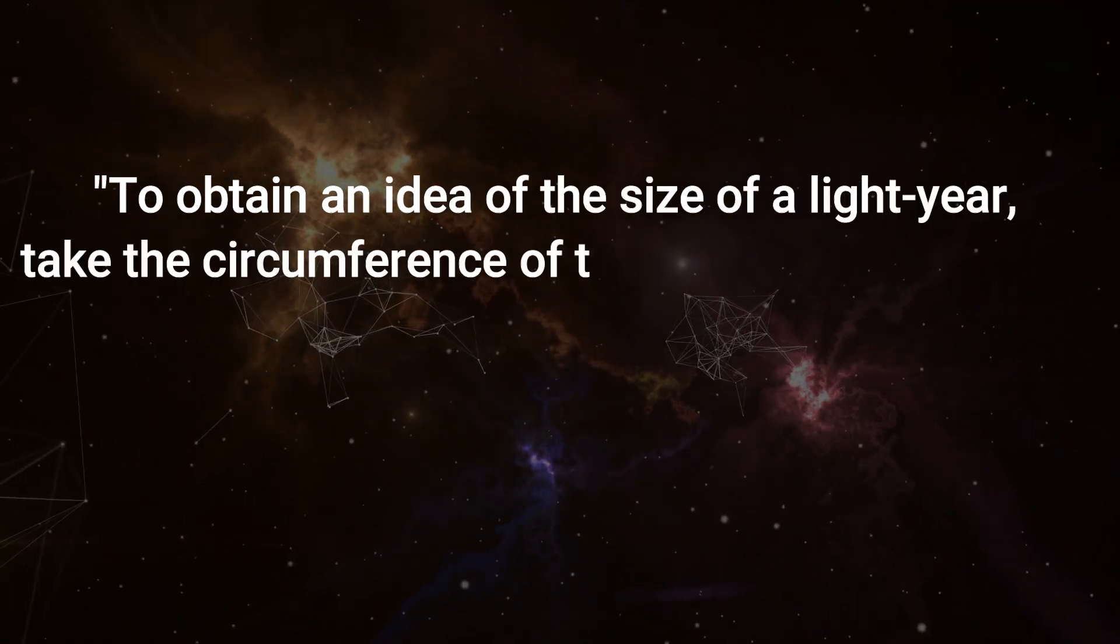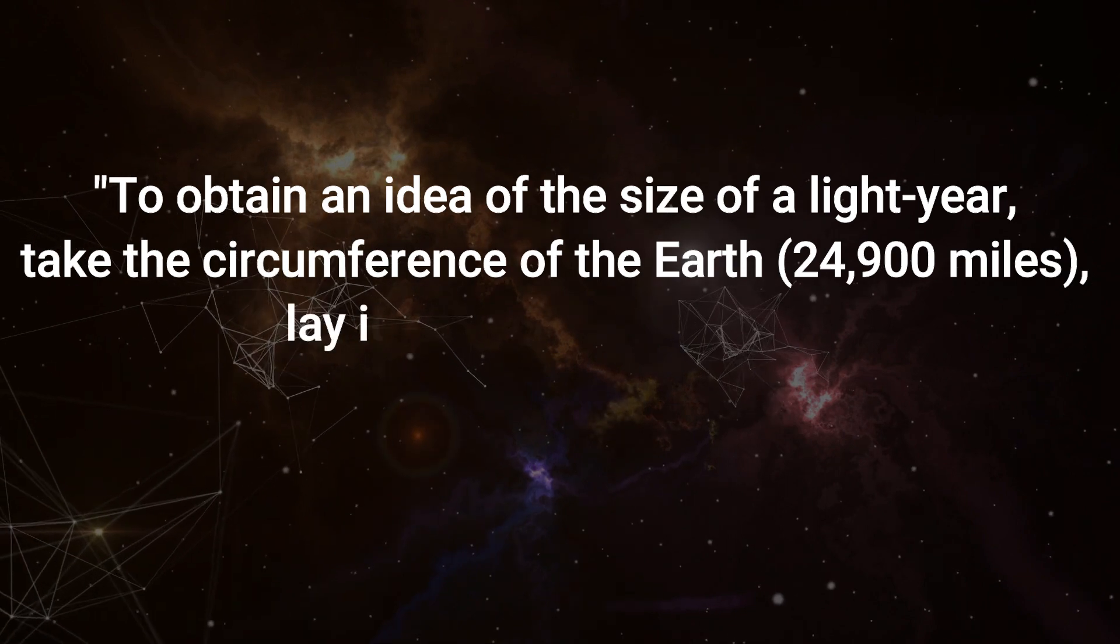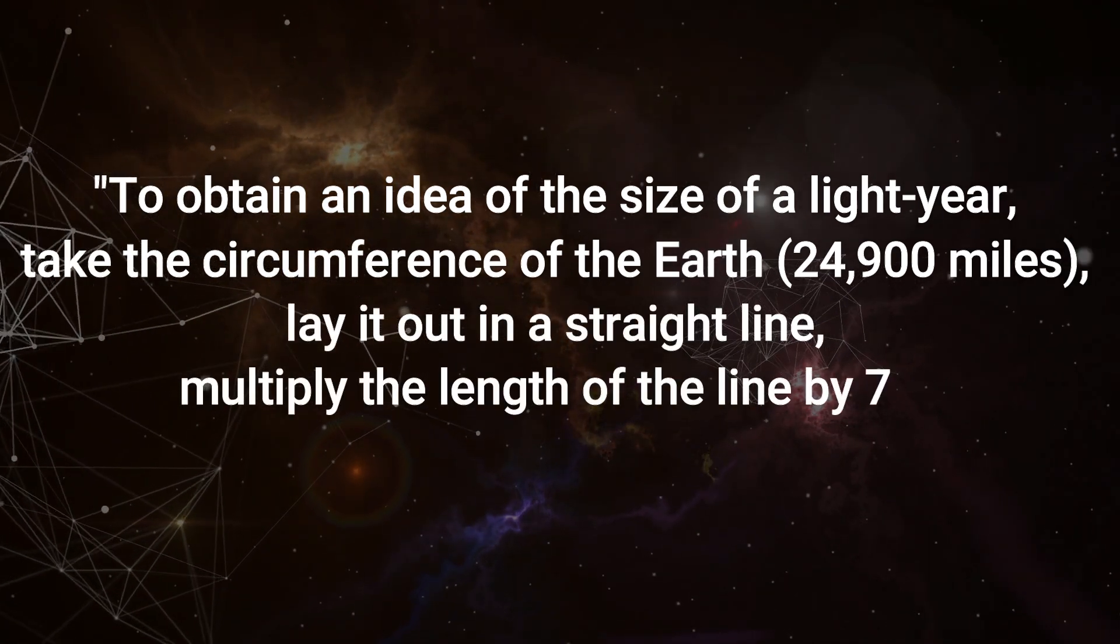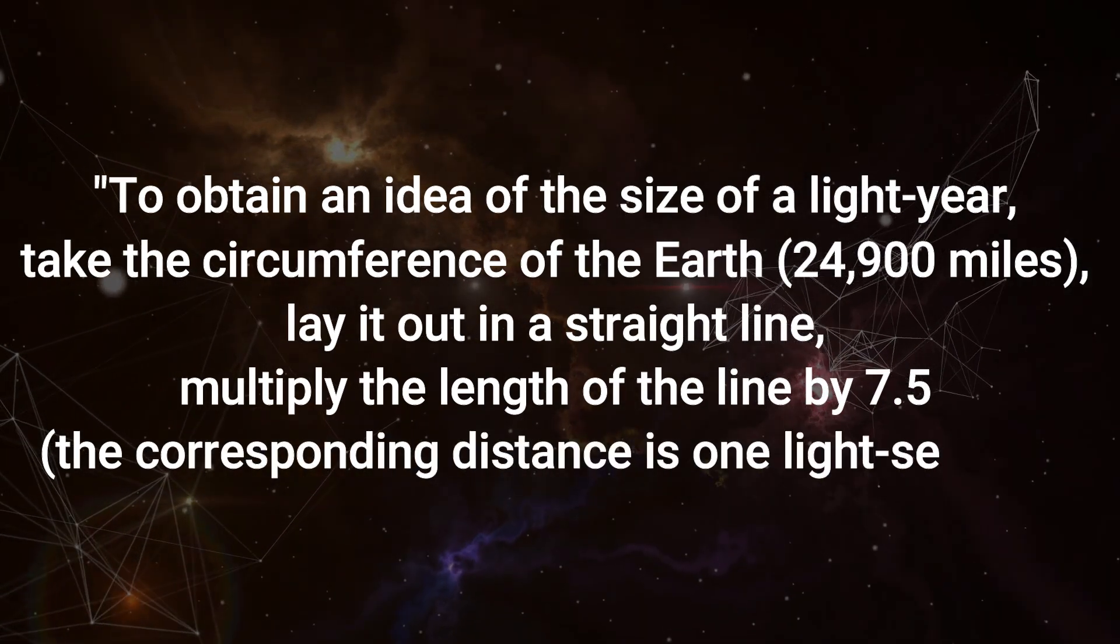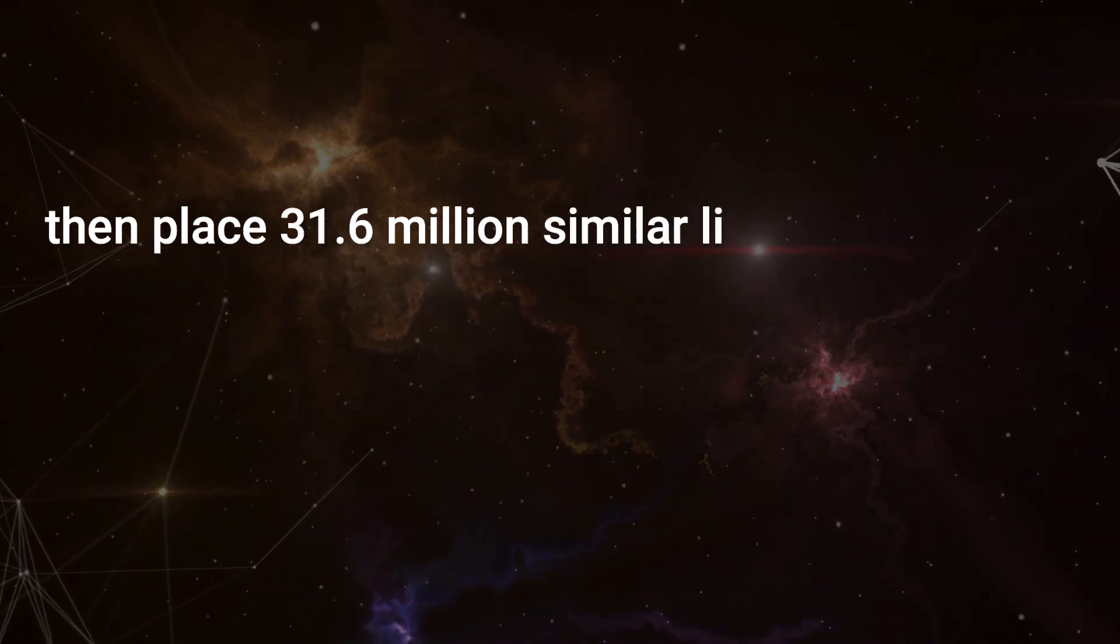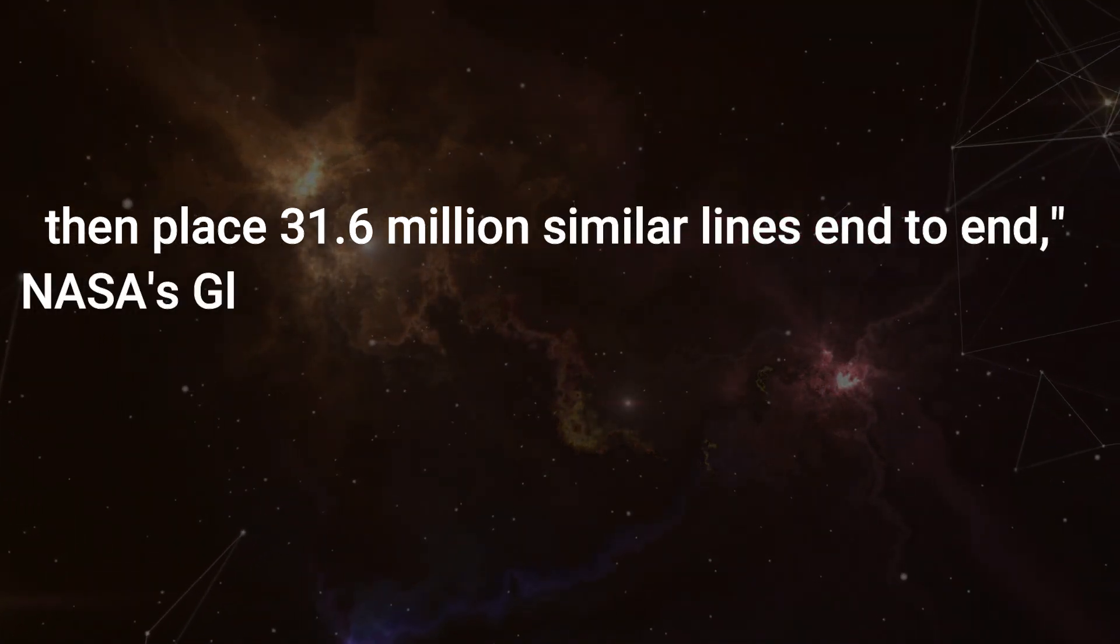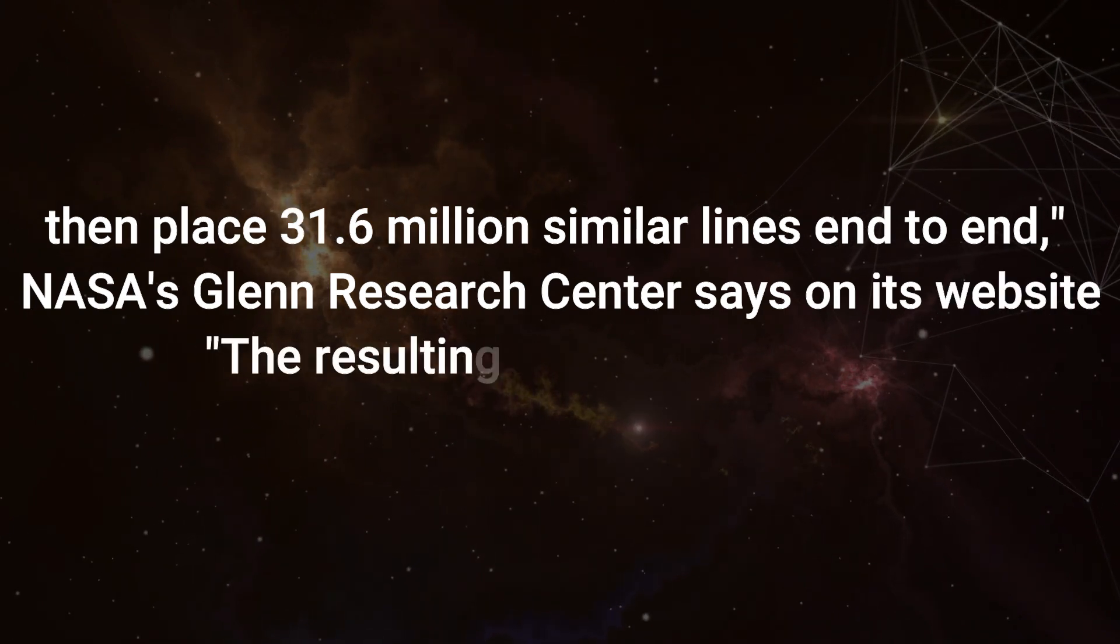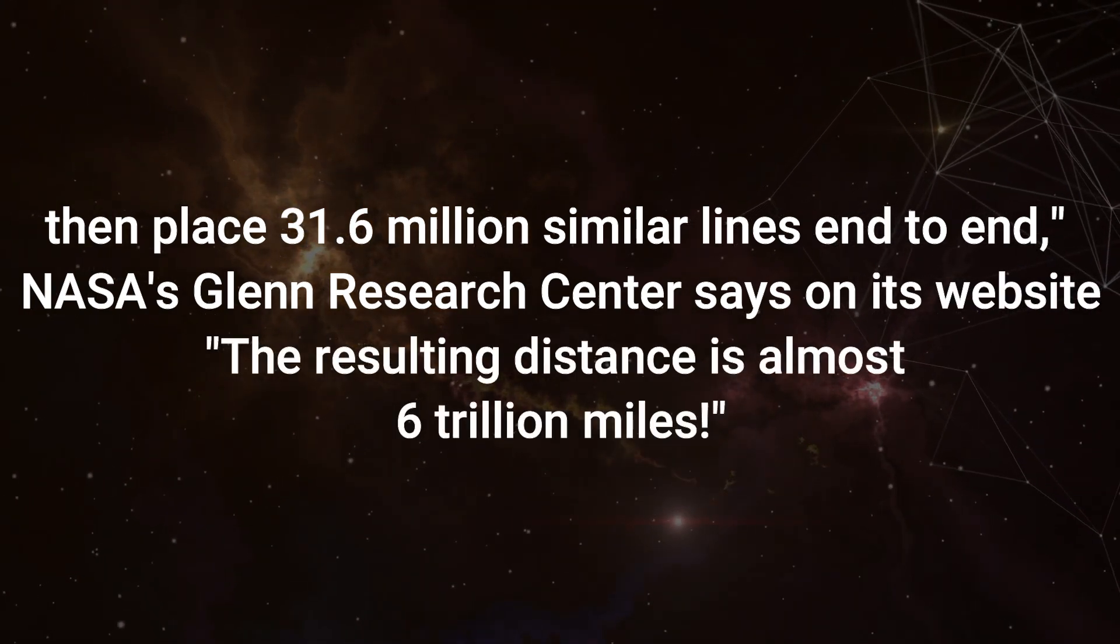24,900 miles, lay it out in a straight line, multiply the length of the line by 7.5. The corresponding distance is one light second. Then place 31.6 million similar lines end-to-end, NASA's Glenn Research Center says on its website. The resulting distance is almost 6 trillion miles.